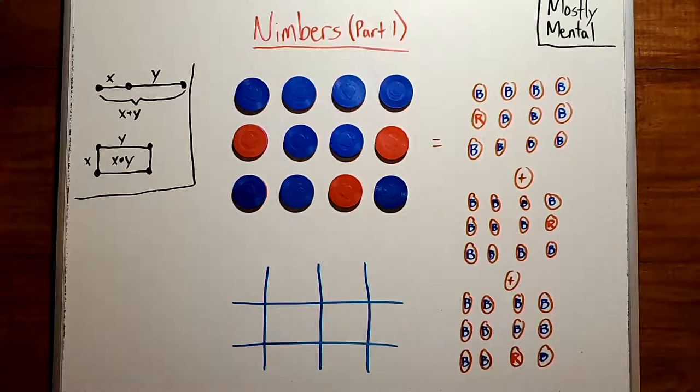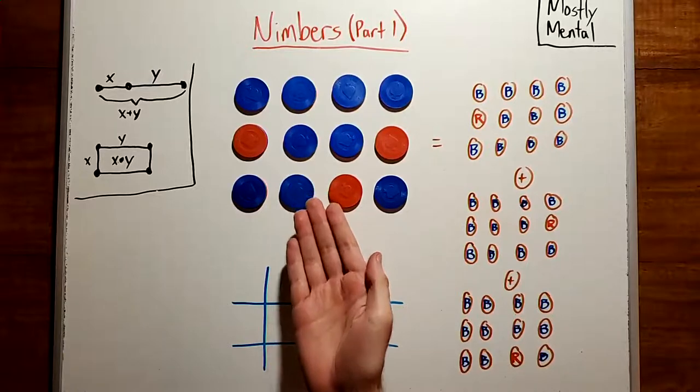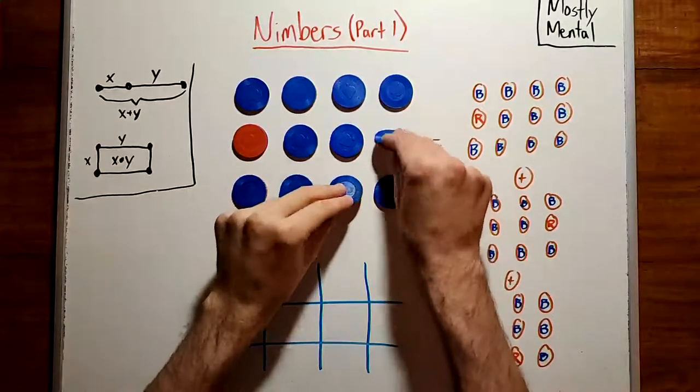In the same way that a Nim position can be written as the sum of individual piles, a position in Twins can be written as the sum of positions with one red coin. And the same is true of Turning Corners. A position like this one can be written as the sum of positions like these. So really, we only need to consider games that start with one red coin.